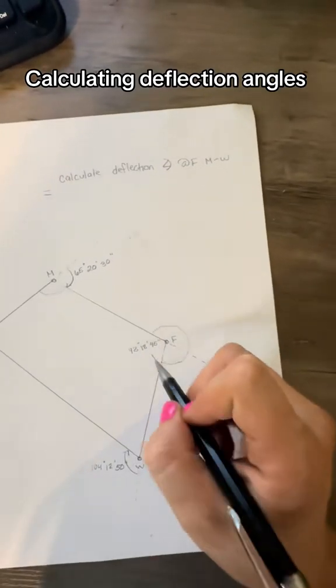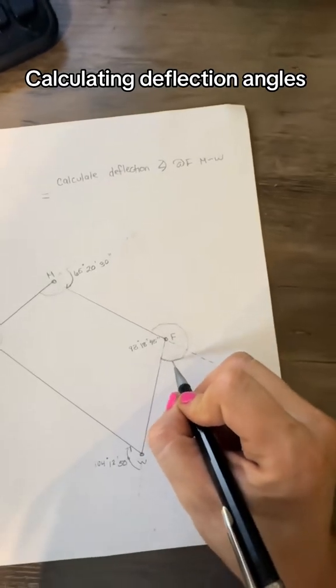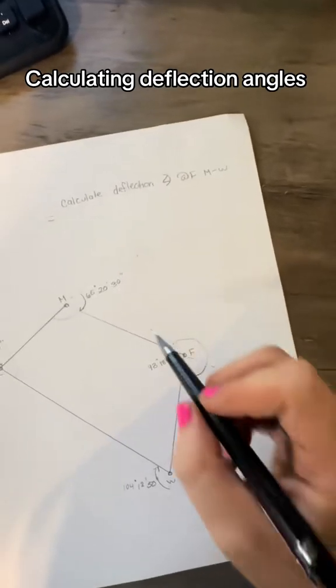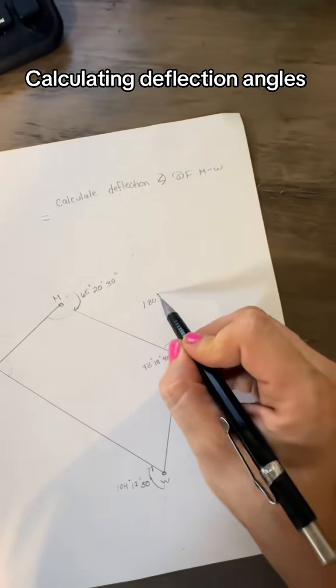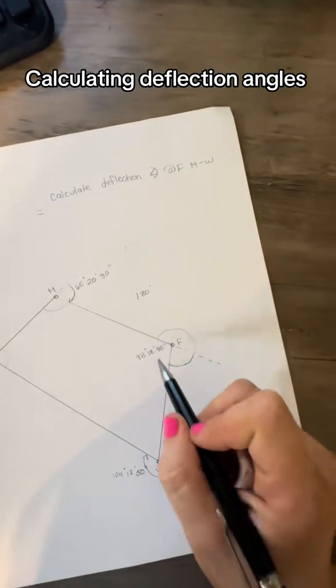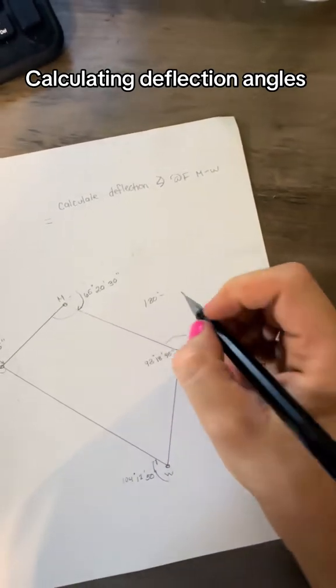We have the interior angle of F, so this is the angle that we want to calculate. So all you're going to do is take 180 degrees and subtract the rest of the interior angle here from the circle.